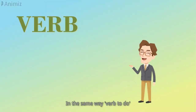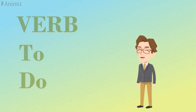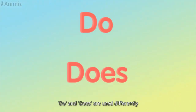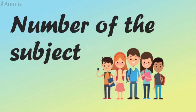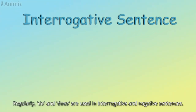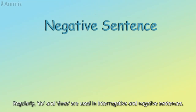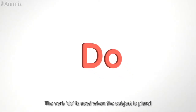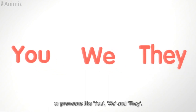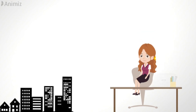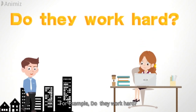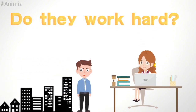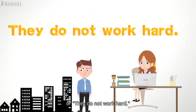In the same way as verb to do, 'do' and 'does' are used differently according to the number of the subject. Regularly, do and does are used in interrogative and negative sentences. The verb 'do' is used when the subject is plural or pronouns like you, we, they. For example: do they work hard? Or: they do not work hard.